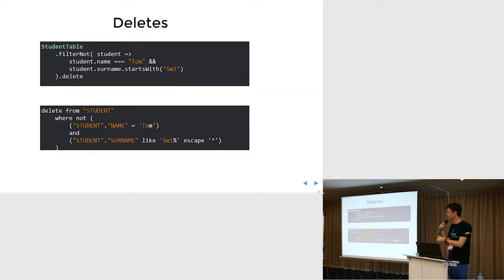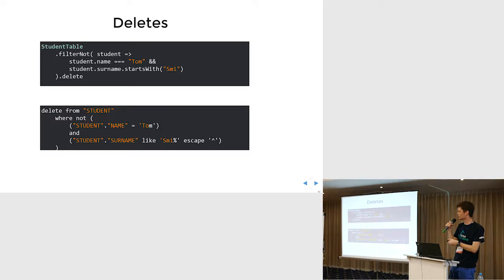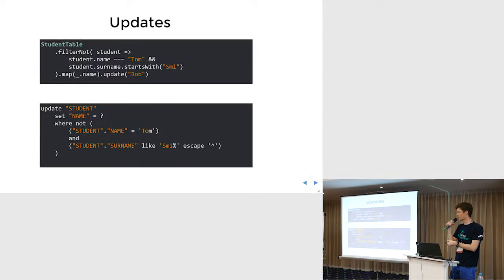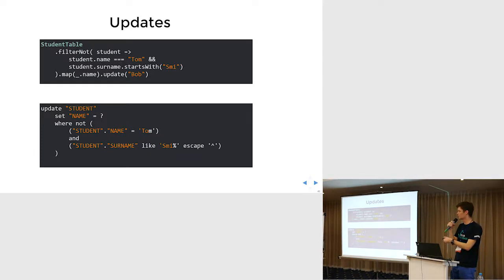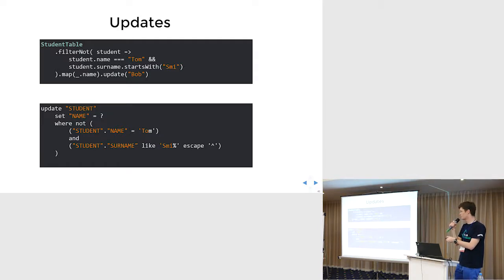Deletes and updates are really simple. We are simply querying for the records we are interested in and then calling the delete method — it will produce the right result. The same goes for updates: we are searching for entities we want to update, then marking the specific field we want to update.